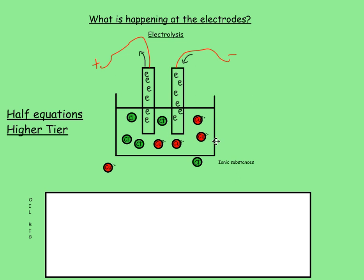For the higher tier, you've got to be able to say what's happening and write down what's happening. Here again, the chlorine goes to this one and the copper goes to the negative one. Let's look at the copper first. We've got copper ions like this; they have a charge. That's why they're ions.